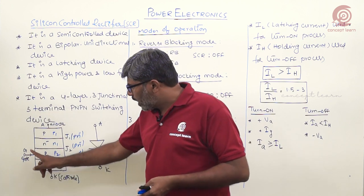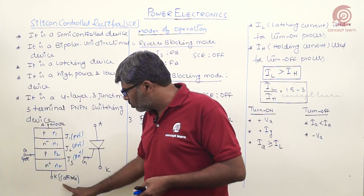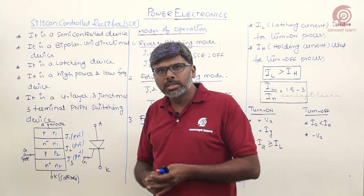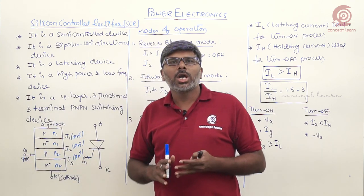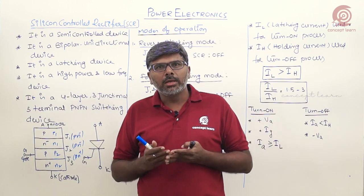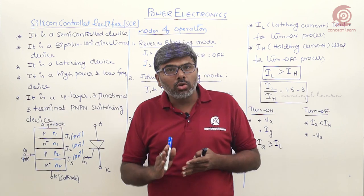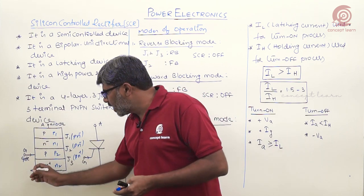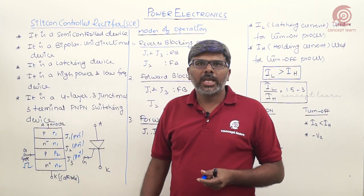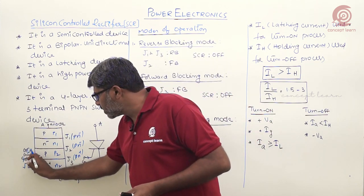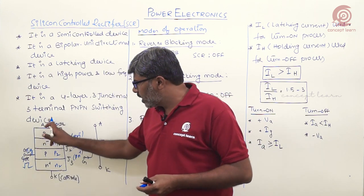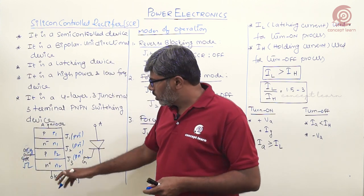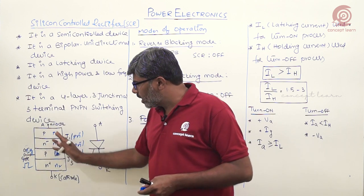The device has three terminals: anode, cathode, and gate. Anode and cathode are connected to the power circuit and are called power terminals. The gate is the control terminal — since SCR is a semi-controlled device, it requires a control signal to turn on. A positive gate current IG in the form of pulses should be applied to bring SCR to the on state.